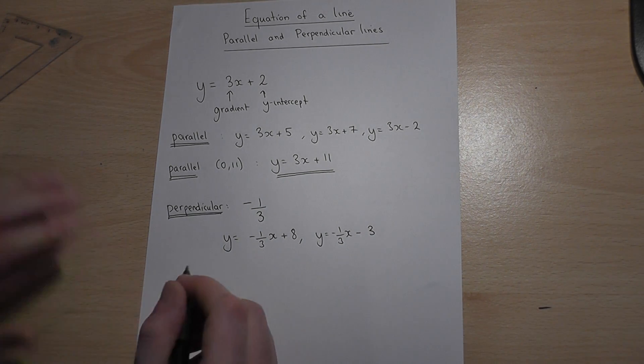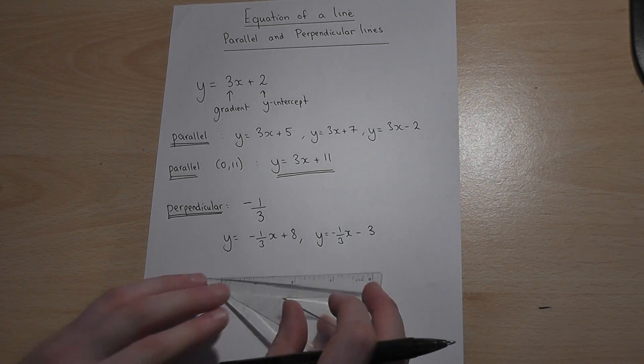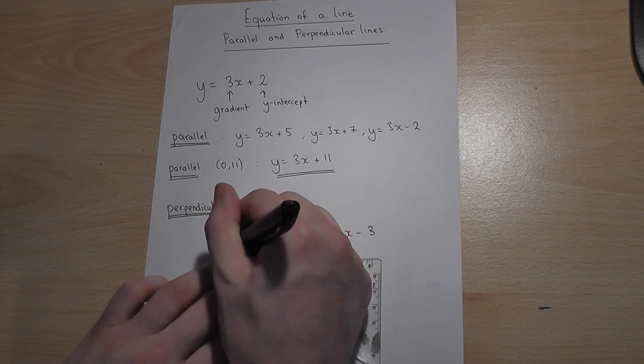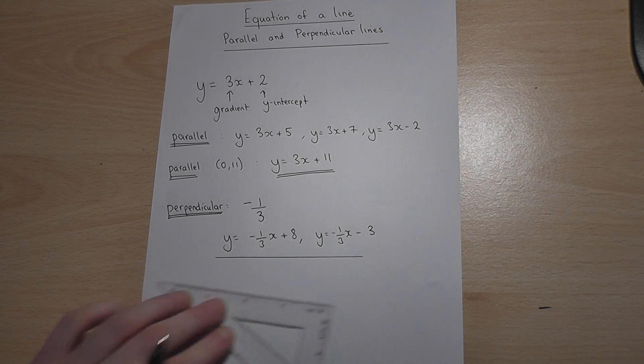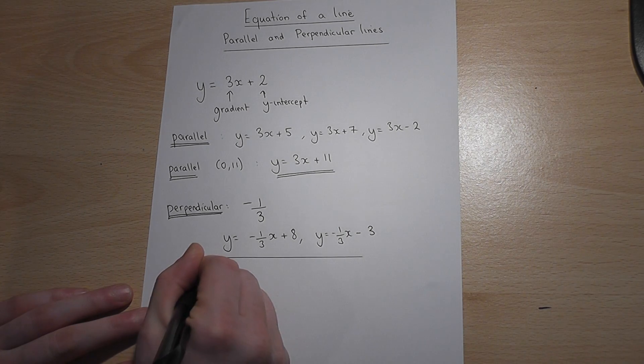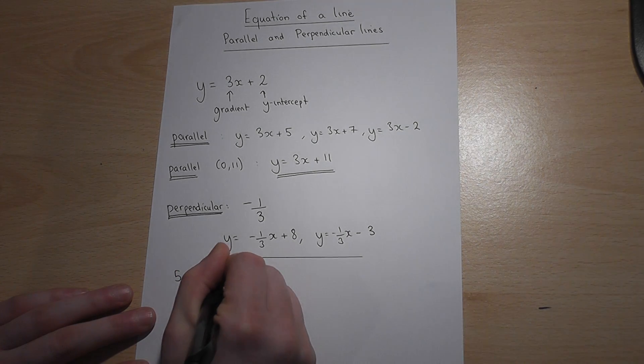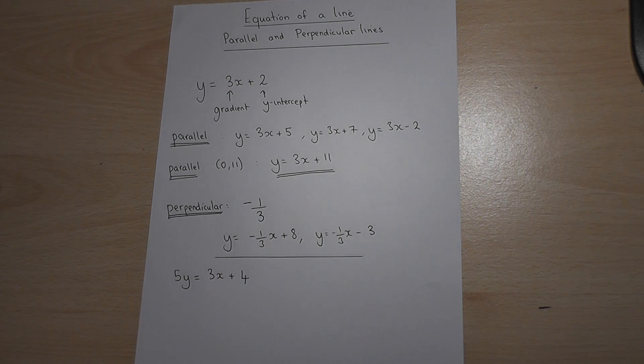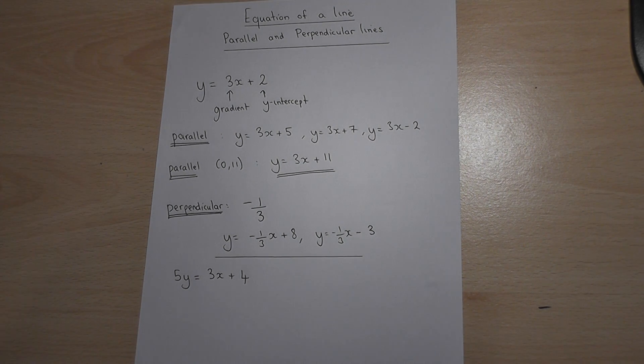Now I just want to finish off with one other idea. Sometimes in a question they give you an equation which looks a bit different and they might ask you what is the gradient and y-intercept of this particular line. Now this is not of the form y equals and it needs a small rearrangement. However, if we divide all the terms by 5, that 5 there cancels out.